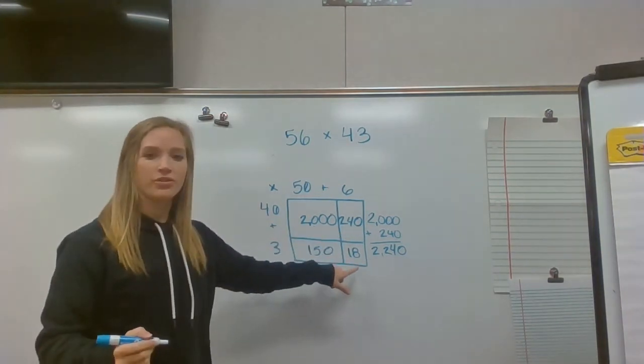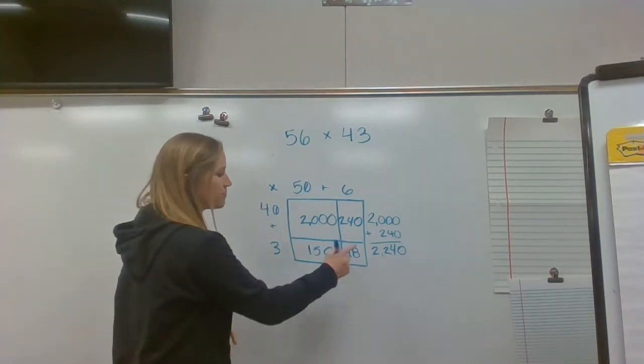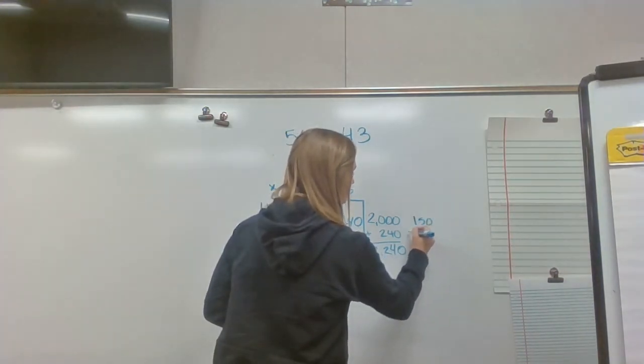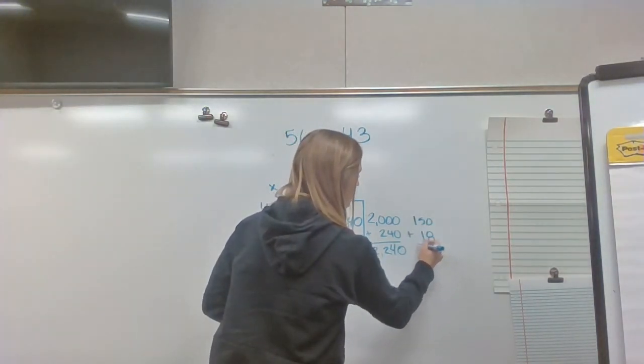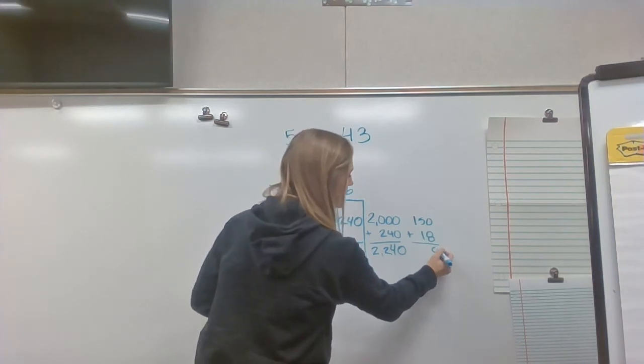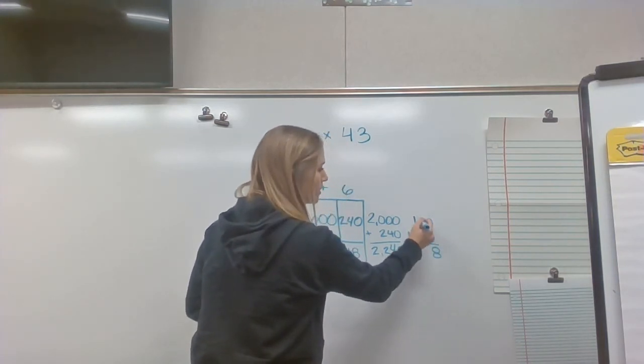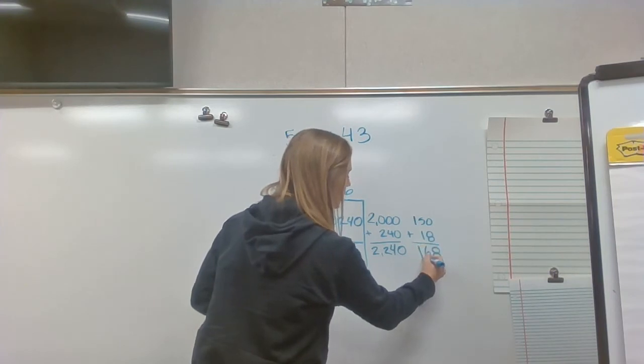Now I need to find the number for this next row, which is 150 plus 18. Zero plus eight is eight. One plus five is six, and drop the one down.